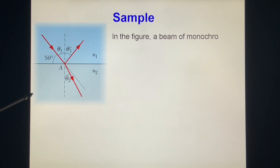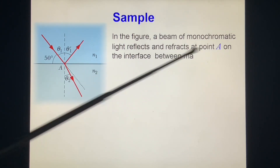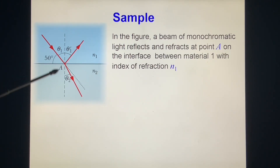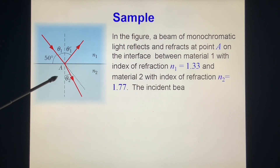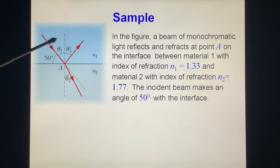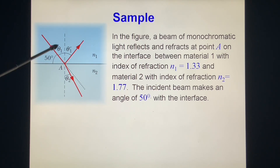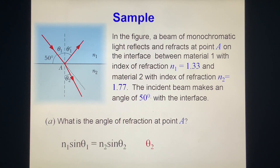In the figure, a beam of monochromatic light refracts and reflects at point A, on the interface between material 1 with index of refraction n1 = 1.33 and material 2 with index of refraction n2 = 1.77. The incident beam makes an angle of 50 degrees with the interface, so θ1 = 90 − 50 = 40 degrees. Question A: What is the angle of reflection at point A? By the law of reflection, it is simply 40 degrees.